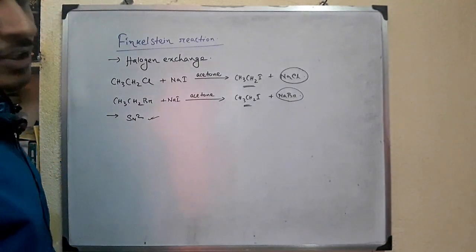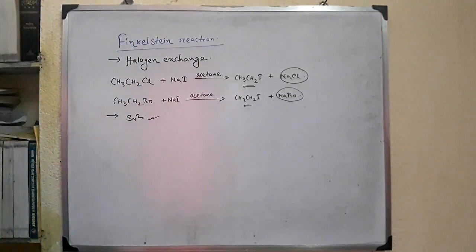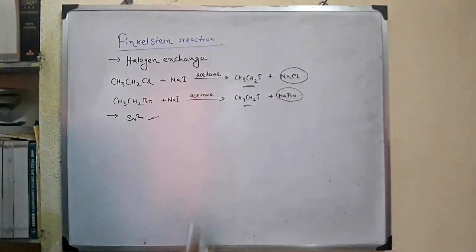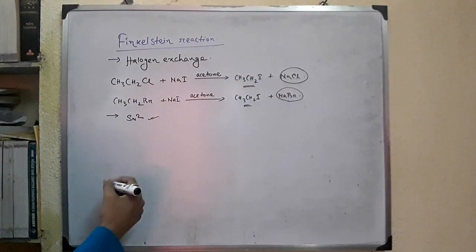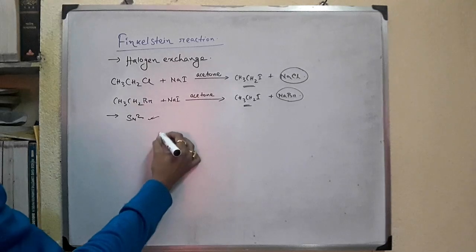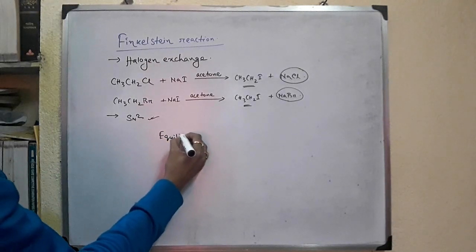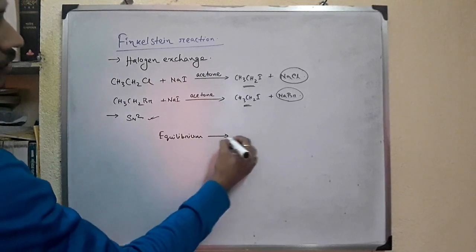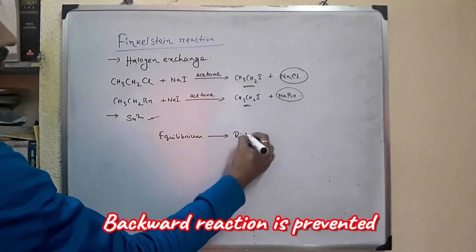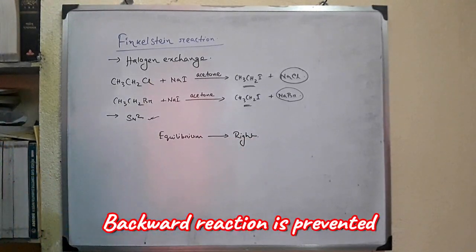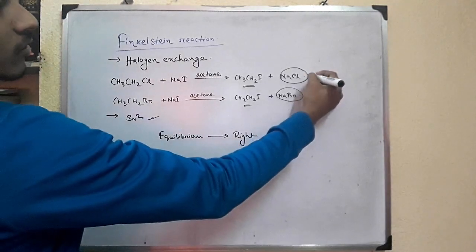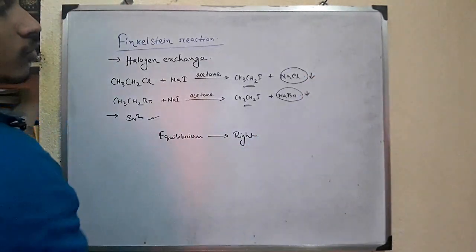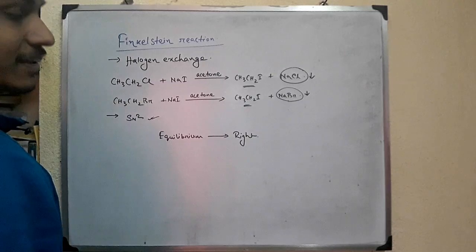They can be removed by filtration. And as they precipitate, according to Le Chatelier's principle, the equilibrium shifts to the right. This means the reaction is driven forward due to the precipitation of the poorly soluble NaCl and NaBr.